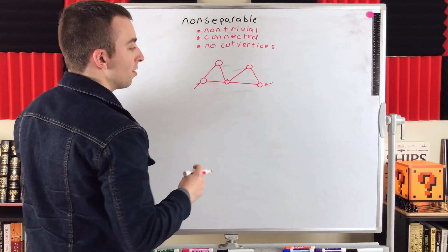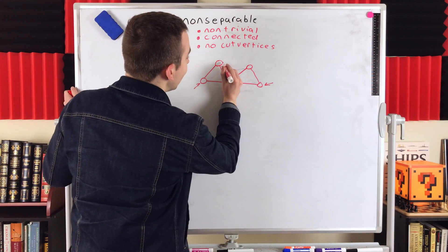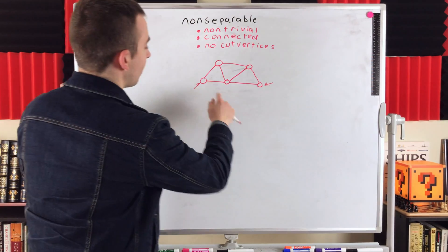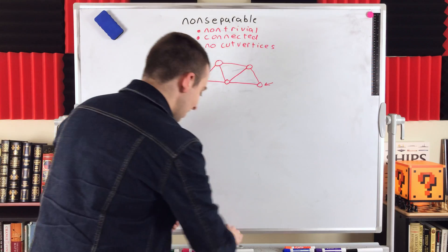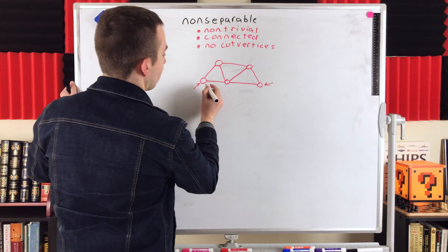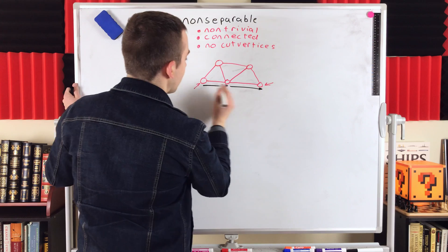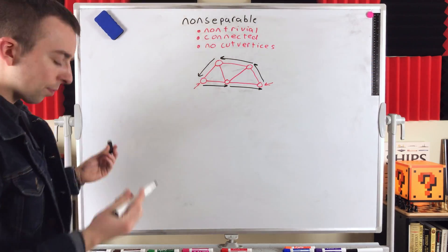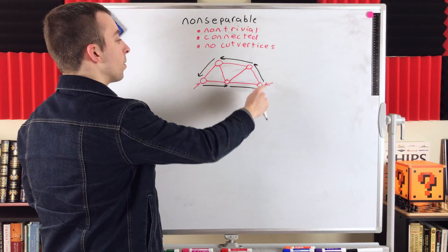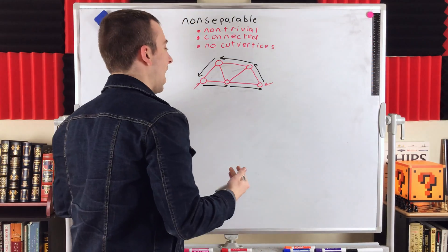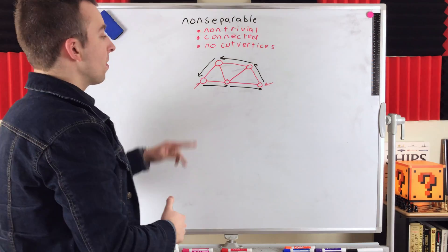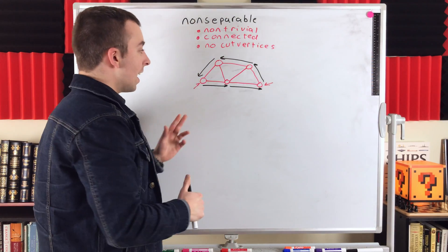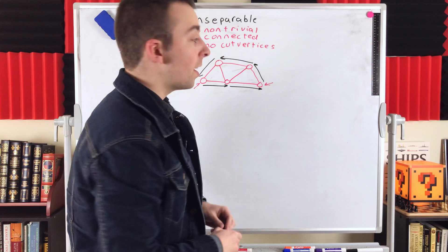Let's add an edge to this graph to fix that problem. If we join those two vertices, they now do lie on a common cycle — the cycle I'm tracing with my finger. I'll outline it: we go from here to here to here to here to here to here back to the starting vertex. As it turns out, this cycle contains every vertex of the graph — it's what we call a Hamiltonian cycle. So of course, every two vertices in this graph now lie on a common cycle. This new graph is also non-separable.